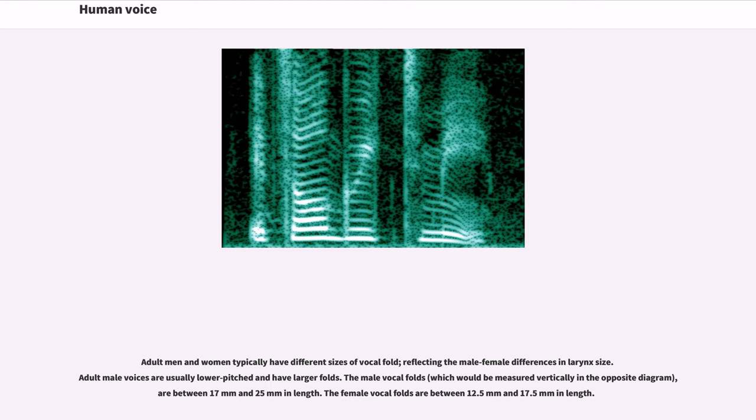Adult men and women typically have different sizes of vocal fold, reflecting the male-female differences in larynx size. Adult male voices are usually lower pitched and have larger folds. The male vocal folds are between 17 mm and 25 mm in length. The female vocal folds are between 12.5 mm and 17.5 mm in length.